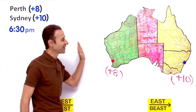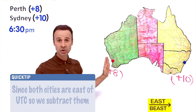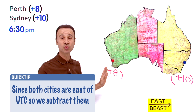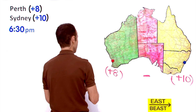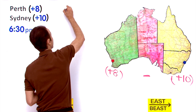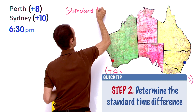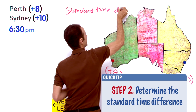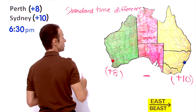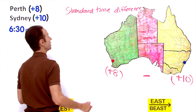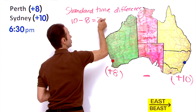Since they are both east, to get the time difference between the two cities we subtract their UTC offsets. The standard time difference between Perth and Sydney is 10 minus 8, which equals 2 hours.